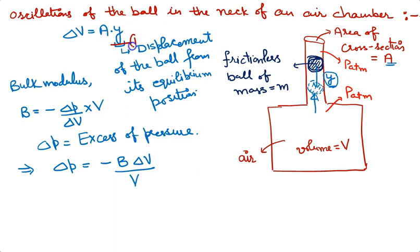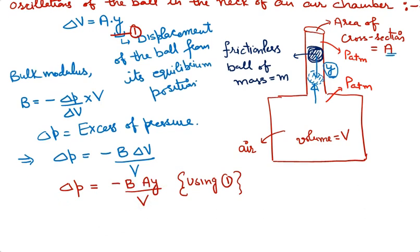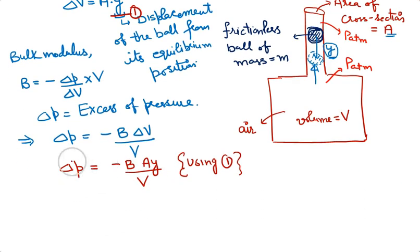From equation number one, we have change in volume which is equal to A into Y. Let us substitute that value. Delta P can be calculated as minus B into A into Y upon V. I am just using equation number one and substituting value of delta V upon V. This represents excessive pressure.